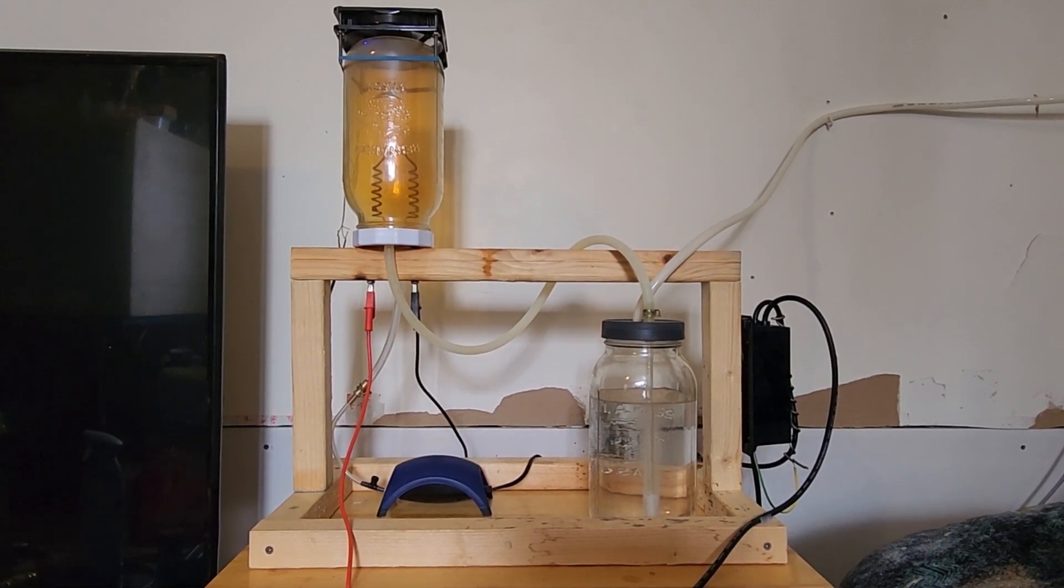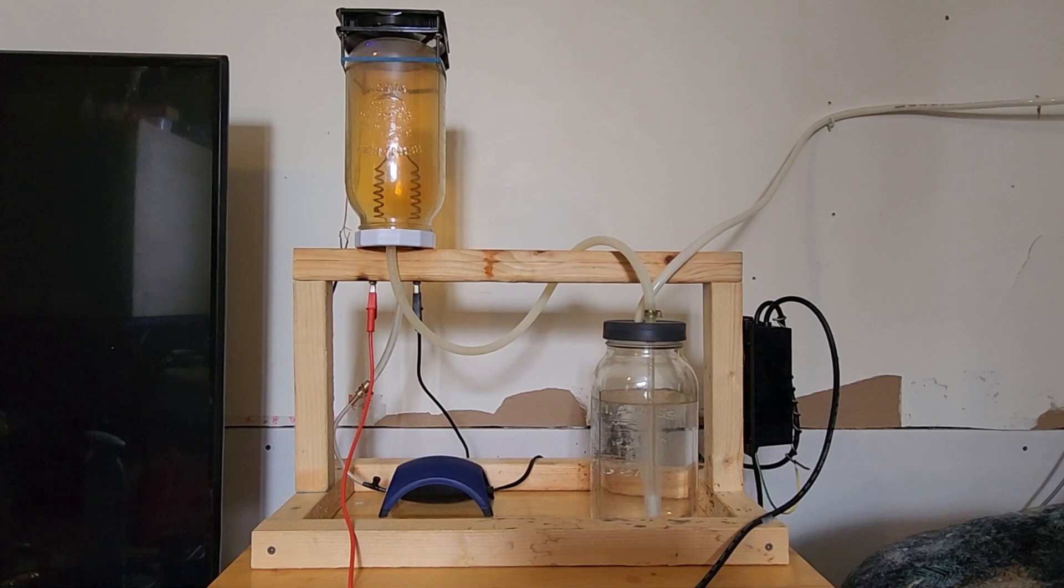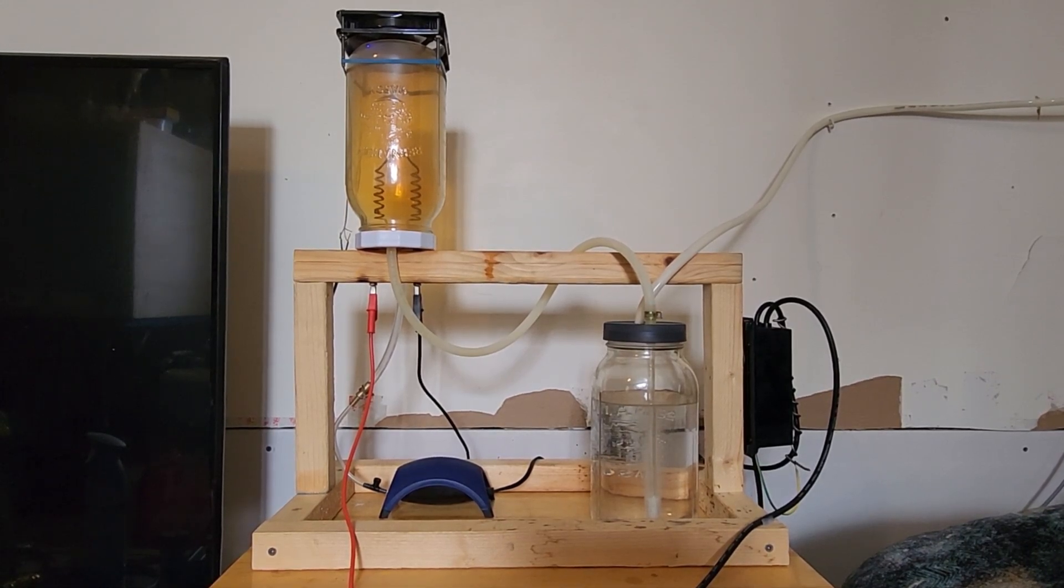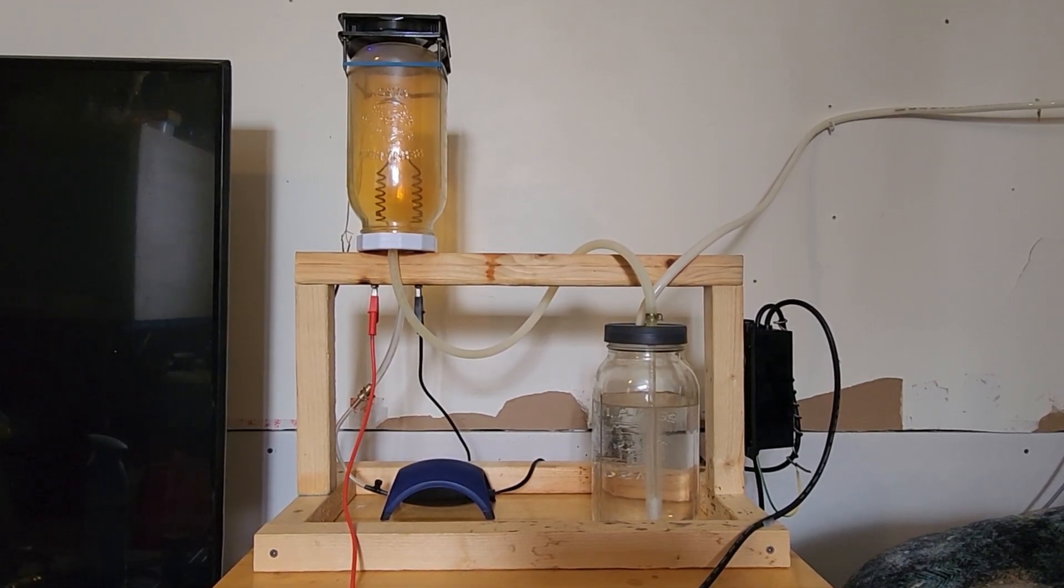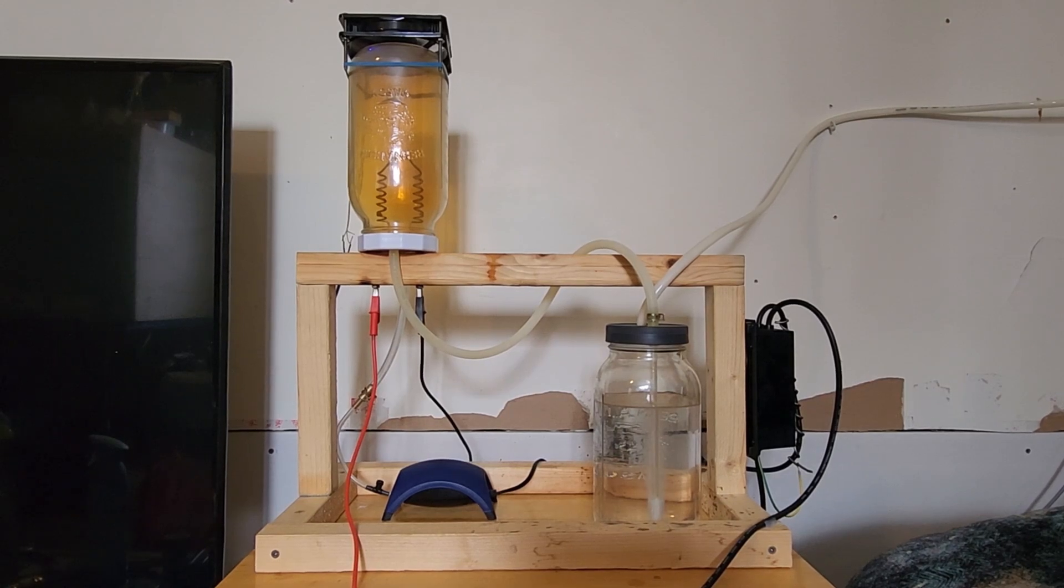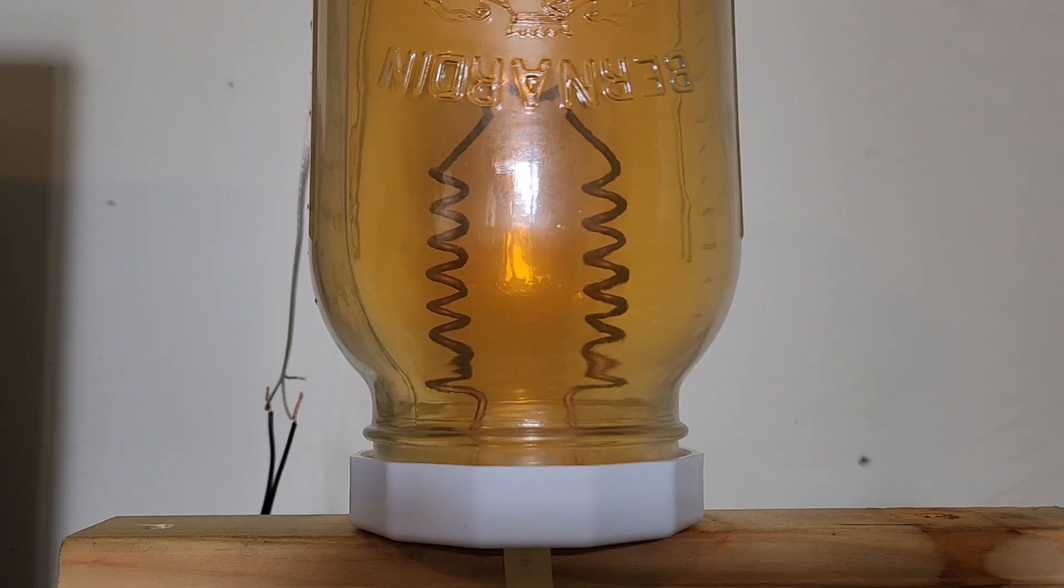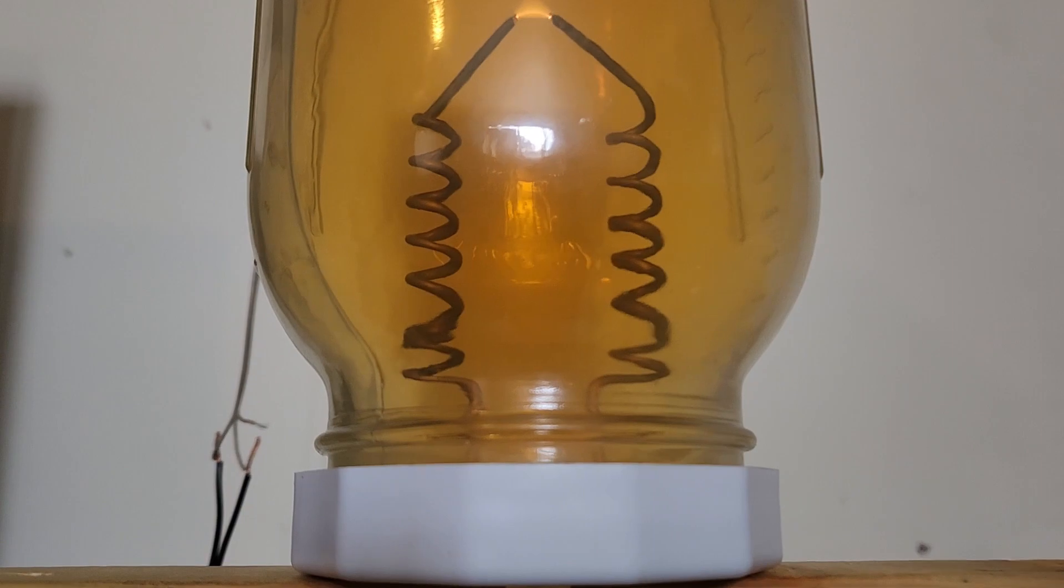Surprisingly, this method produces just as much nitrogen dioxide as the Jacob's ladder method. Also, for added safety, a computer fan was added to keep things cool. Let's take a look. This is the new simple arc system consisting of two coiled copper rods.